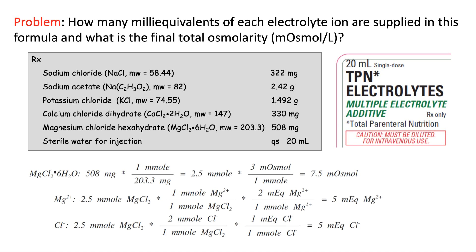Magnesium chloride hexahydrate: 508 mg ÷ 203.3 mg/mmol = 2.5 millimoles. MgCl₂ dissociates into 1 Mg²⁺ and 2 Cl⁻ (3 particles): 2.5 × 3 = 7.5 milliosmoles. For magnesium milliequivalents: starting with 2.5 mmol of MgCl₂ times 1 mmol Mg per mmol MgCl₂ — and continuing the same calculation approach as previous electrolytes.